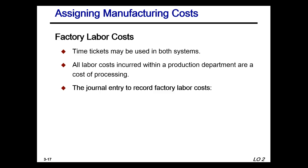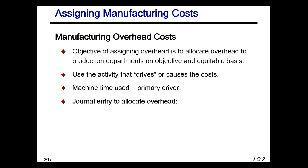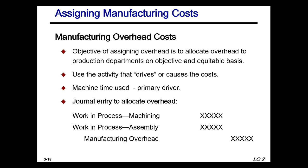As for factory labor costs, time tickets are used in both systems. All labor costs incurred within a production department are a cost of processing. The journal entry will debit WIP machining and WIP assembly, and credit factory labor. For manufacturing overhead, we allocate overhead to the various departments based on the activity driver — if machine time is the predominant factor, that is what we use as our driver.